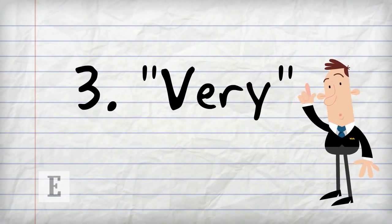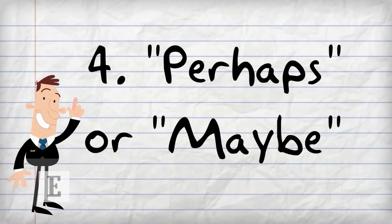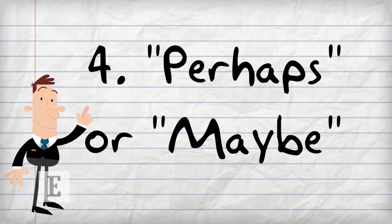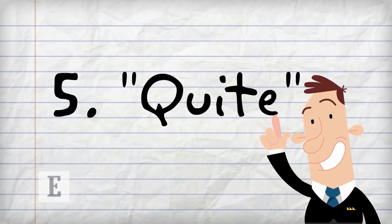Four: Perhaps or Maybe. When you use words like maybe and perhaps, uncertainty is all that you're communicating. Five: Quite. When someone uses quite, sometimes the word adds meaning and sometimes it's fluff.